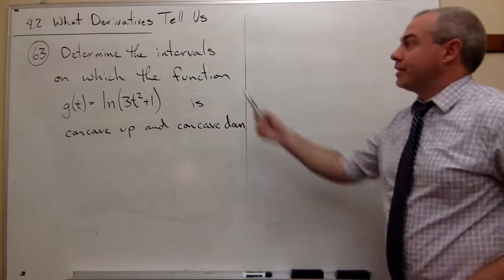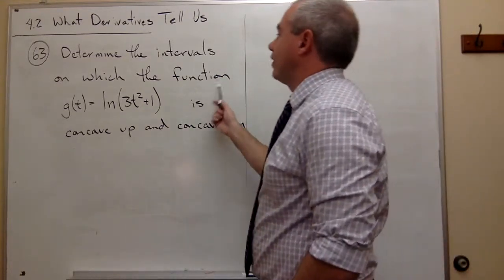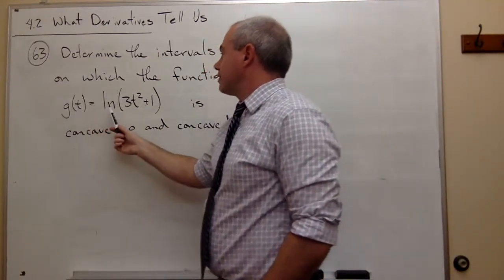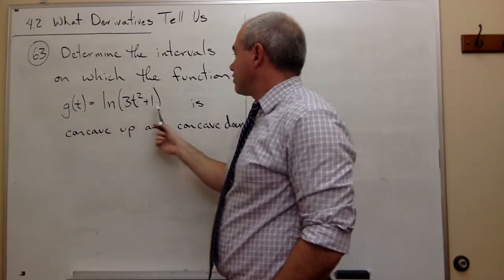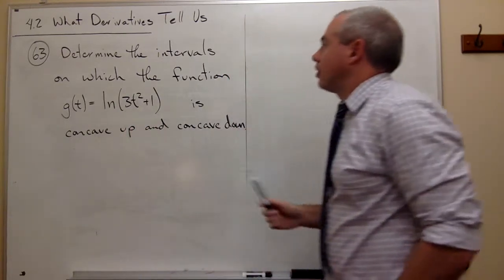In number 63, we want to determine the intervals on which the function g(t) = ln(3t² + 1) is concave up and concave down.